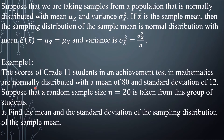Example: The scores of grade 11 students in an achievement test in mathematics are normally distributed with a mean of 80 and standard deviation of 12. Suppose that a random sample of size n equal to 20 is taken from this group of students. Find the mean and the standard deviation of the sampling distribution of the sample mean.